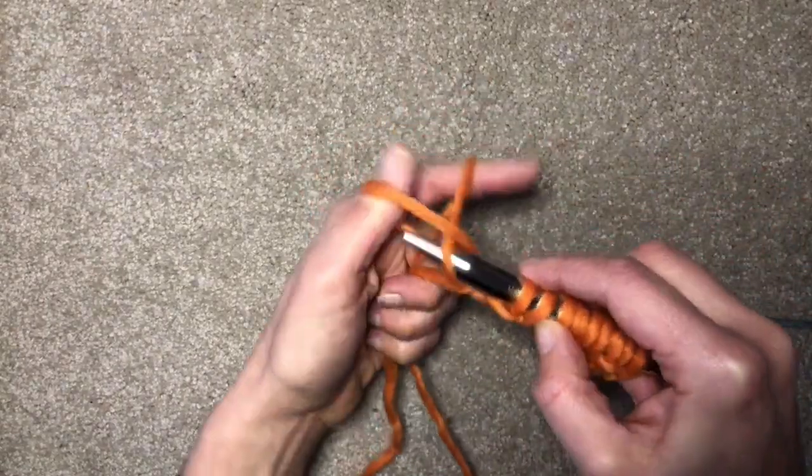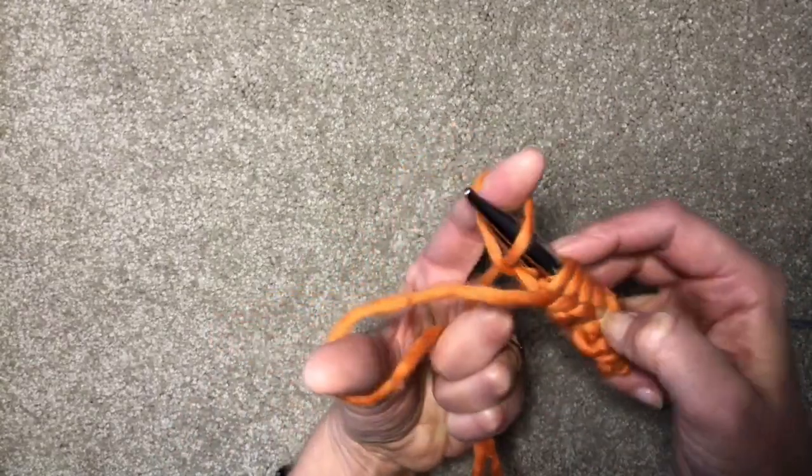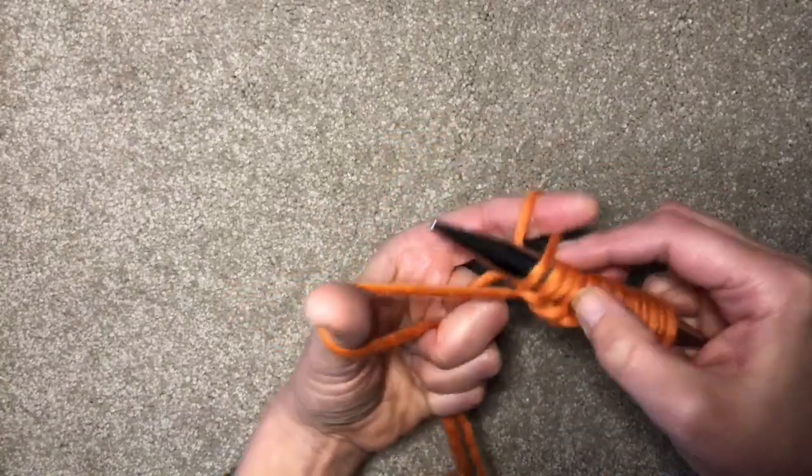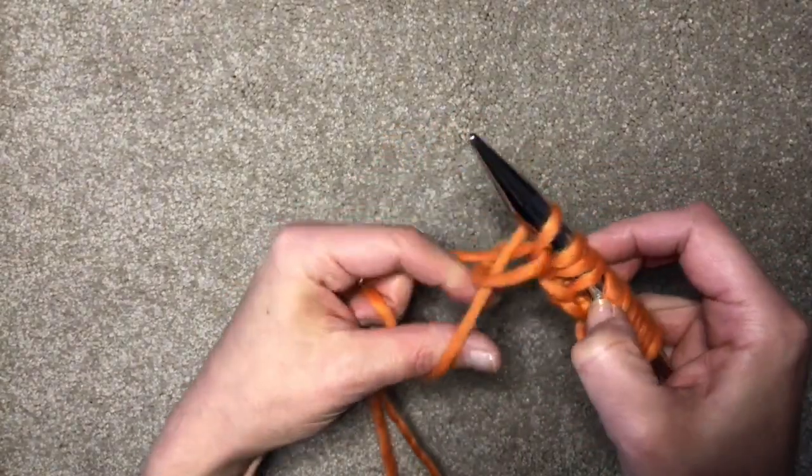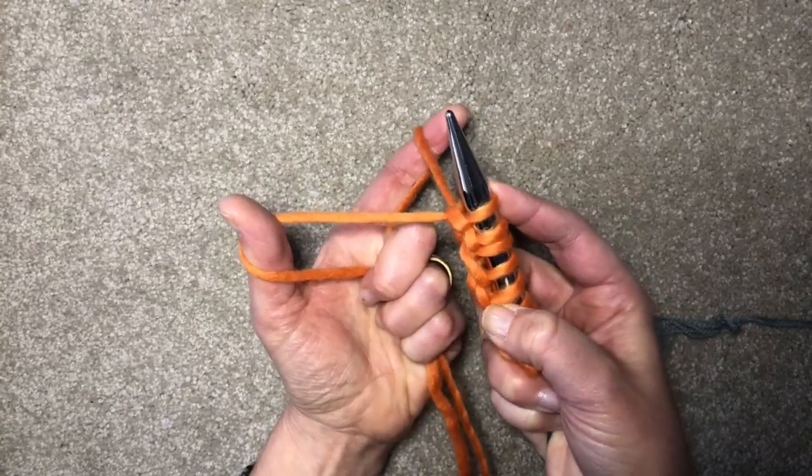So you can do any ribbing pattern. You can do knit two, purl two ribbing, whatever you want, and set up your stitches. This also turns out is the basis of a two-color cast on.